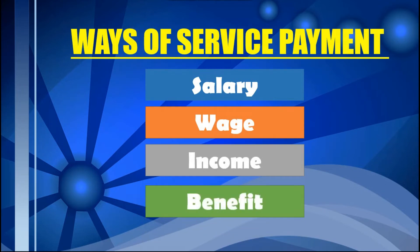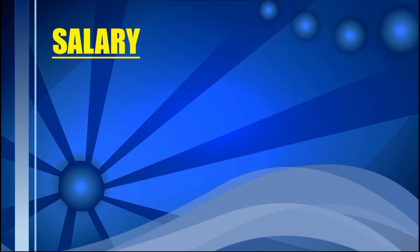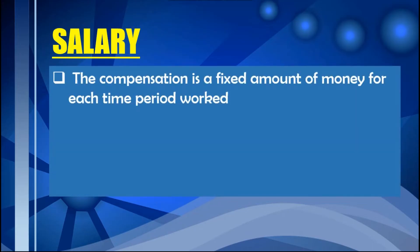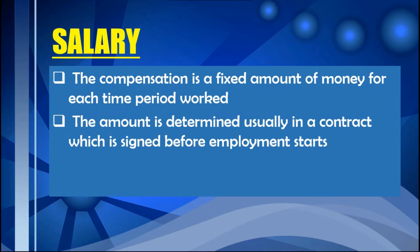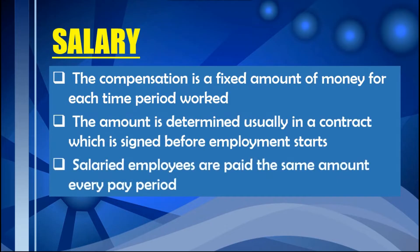Let's begin with salary. The compensation is a fixed amount of money for each time period worked. The amount is determined usually in a contract signed before employment starts, meaning salaried employees have employment contracts. They are paid the same amount every pay period, regardless of hours worked, holidays, etc. Salary earners are usually paid every 15 days or monthly.